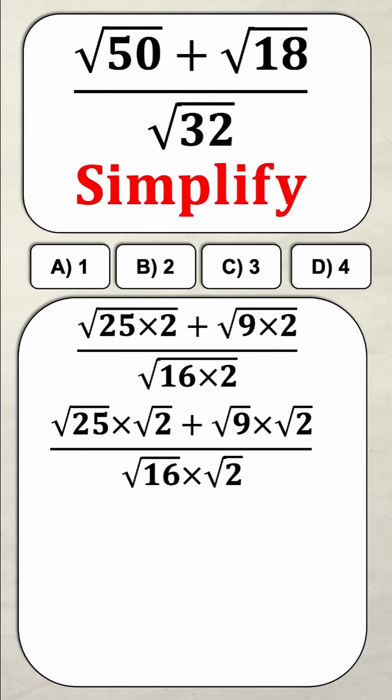Now we know the square root of 25, the square root of 9, and the square root of 16 because they're all perfect squares. So if I substitute in all of the perfect squares then I get 5 root 2 plus 3 root 2 divided by 4 root 2.